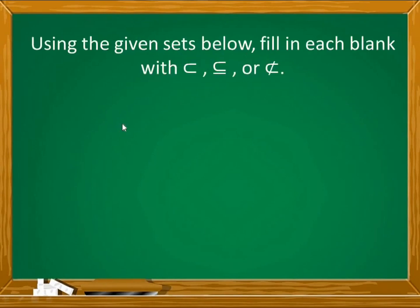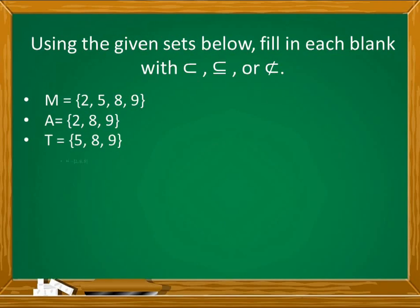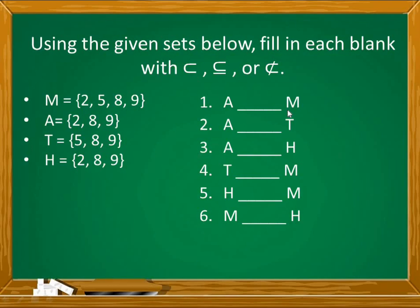Let's have more examples. Using the given sets below, fill in each blank with proper subset, subset, or not a proper subset. Set M with elements 2, 5, 8, and 9; set A contains 2, 8, and 9; set T has elements 5, 8, and 9; and set H with elements 2, 8, and 9. For number 1, set A blank set M. Check the elements of set A — 2, 8, and 9 — and check if they are present in set M, which has 2, 5, 8, and 9. Yes! Set M has an extra element 5 not in A, so the answer is proper subset.